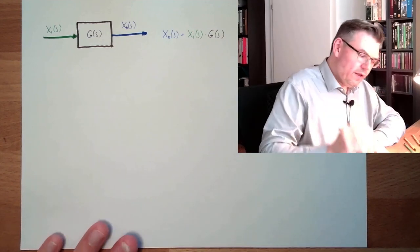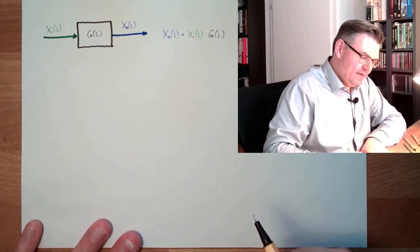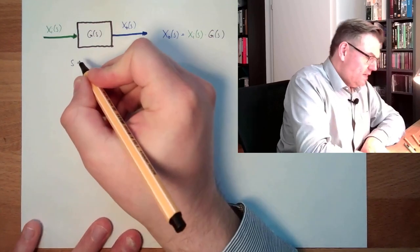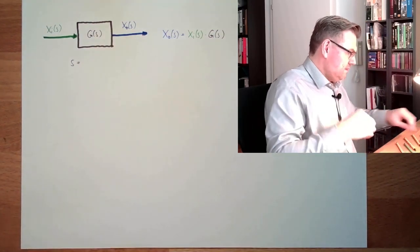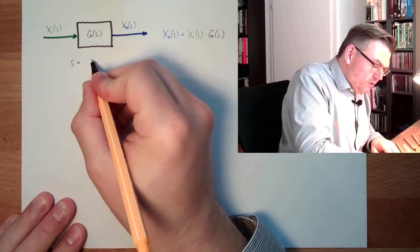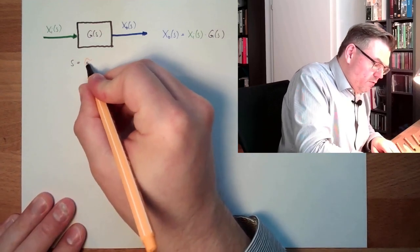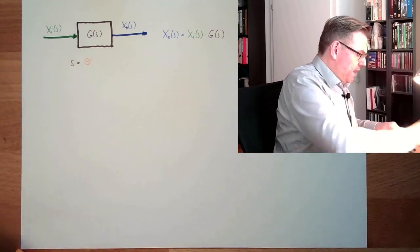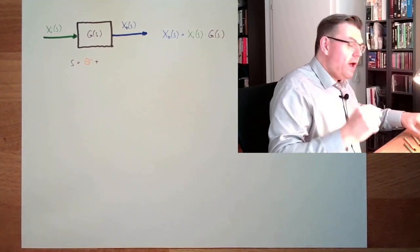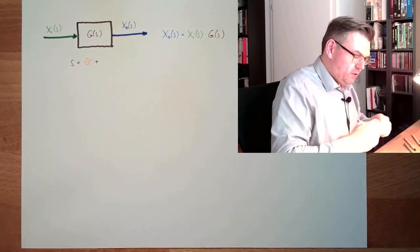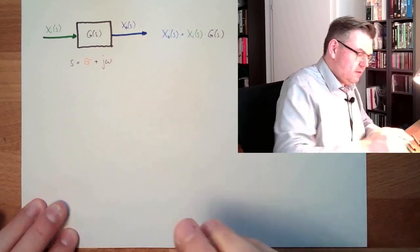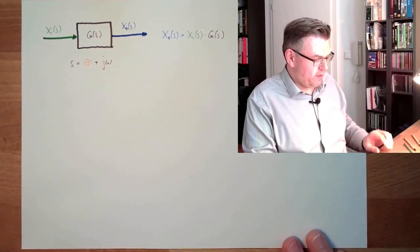Now let's have a short look at this S. S is a complex variable which contains a real part and then plus an imaginary part, jω. So S equals sigma plus jω.